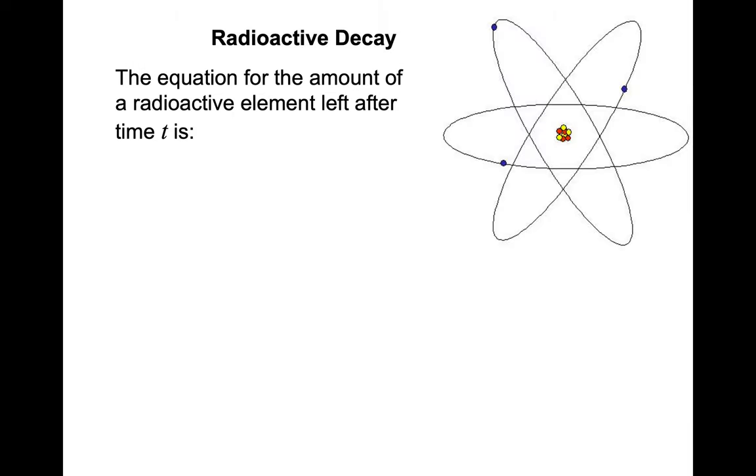Radioactive decay is another situation where we use exponential functions. And sometimes they'll write this with this format. Instead of y-naught e to the kt, they'll put a negative k. The reason for that is so that k, the rate of decay, can be expressed as a positive value. So sometimes you'll see that written that way.